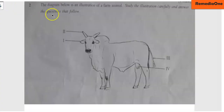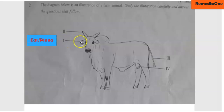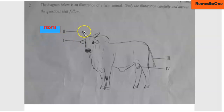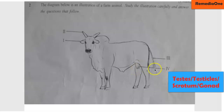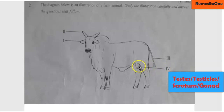The part labeled I is ear — don't write 'ears' because it is pointing to only one ear. You can also write 'pinna.' Part II is horn — don't write 'horns.' Part III is tail. Part IV is testicle or testis; you can also write scrotum because the pointer is pointing to that part. Scrotum, testis, or testicles are all accepted.